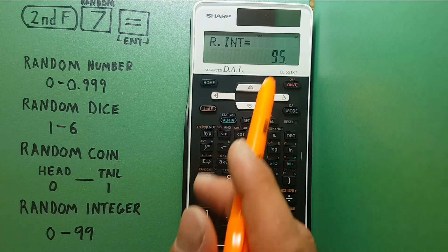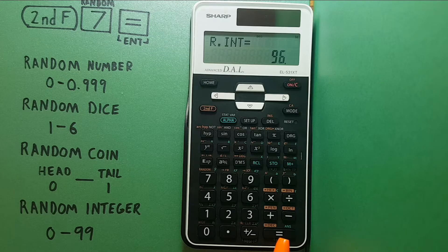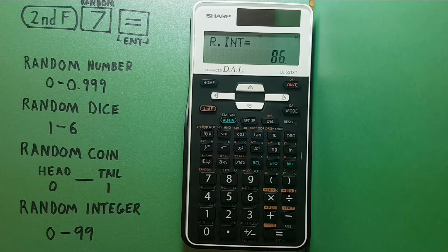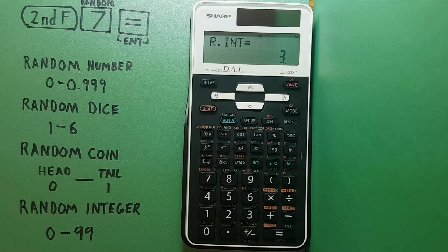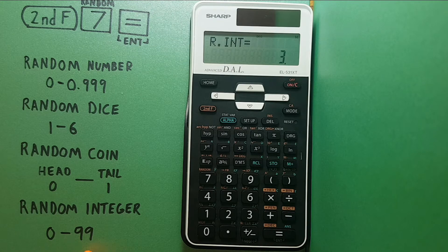We got 95 this time. Again, 96, 86, 74, three. You can see these are all random numbers between zero and 99.